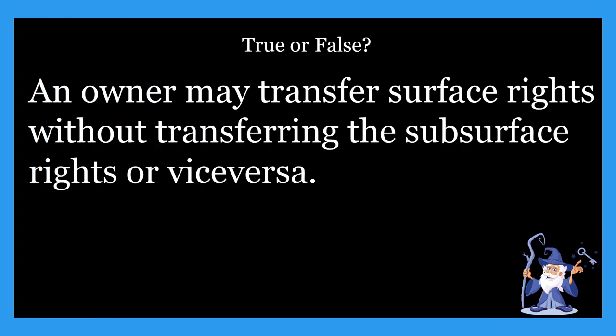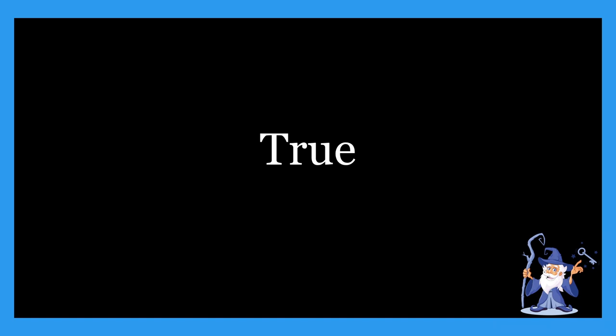Next one: an owner may transfer surface rights without transferring the subsurface rights or vice versa. Is that true or false? This one is going to be true. Surface rights are transferable without transferring subsurface rights. For example, a landowner can sell his rights to an oil and gas company — the subsurface rights — but still own the land on top. They are both transferable without transferring ownership of the other right.